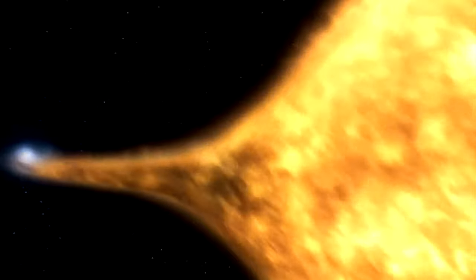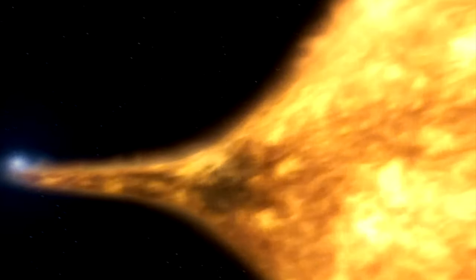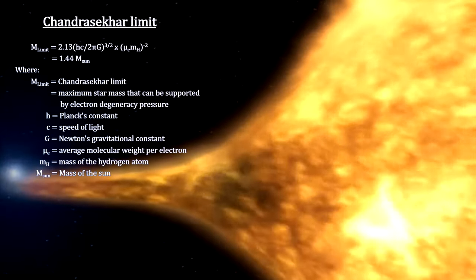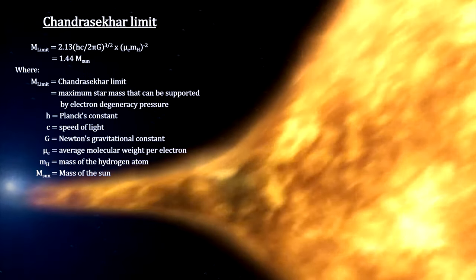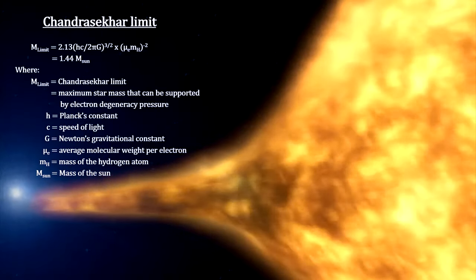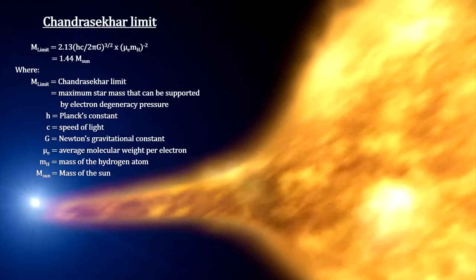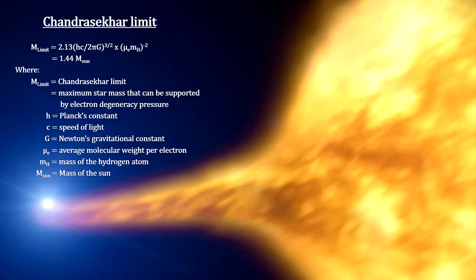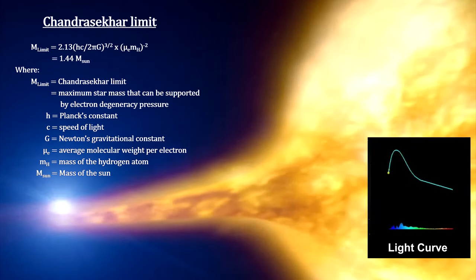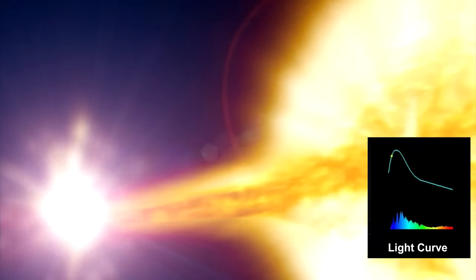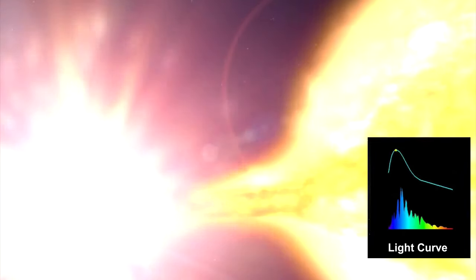The mass of the dwarf star increases. Once the mass of the smaller star reaches a critical level, its ability to hold off collapsing under the force of gravity comes to an end. The result is a total collapse inside a few seconds. This creates a supernova explosion that rips the smaller star to pieces.